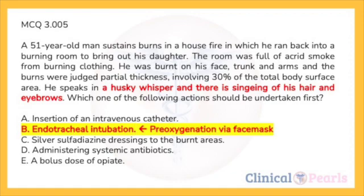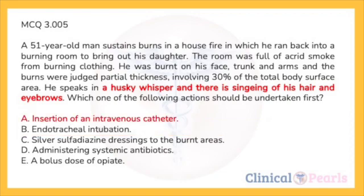Note: if pre-oxygenation is among the choices, that should be done first while preparing for intubation. Intravenous access is also important as this man will require large volumes of fluid rapidly, but this can be done once the resuscitation team is confident they have control of the airway. He will also need analgesics, antibiotics, dressings, and antimicrobial creams to cover the wounds, but these are all of lesser initial importance.